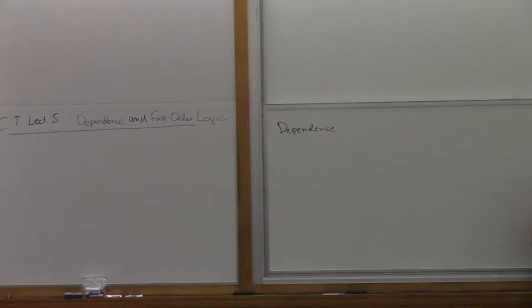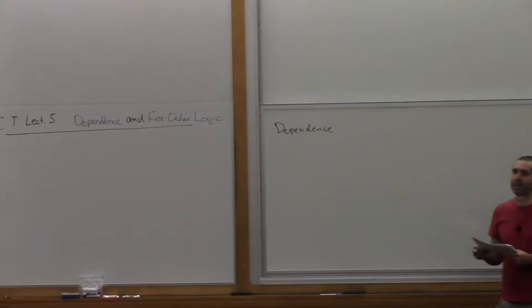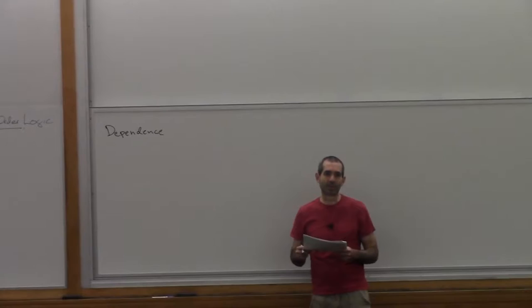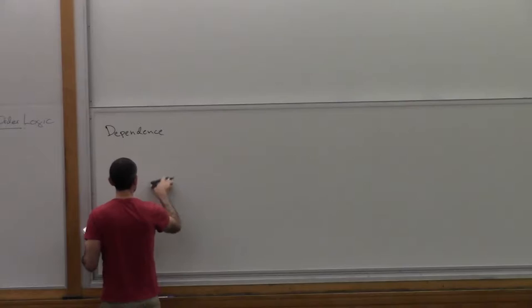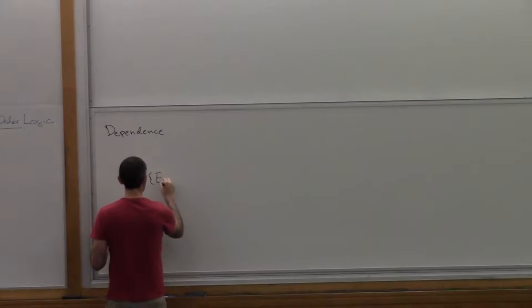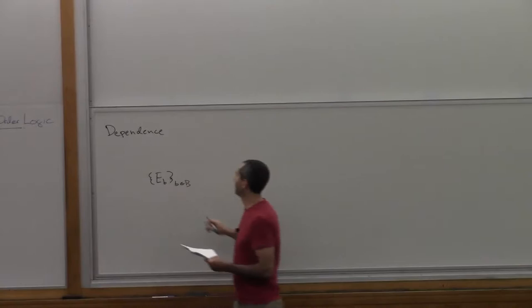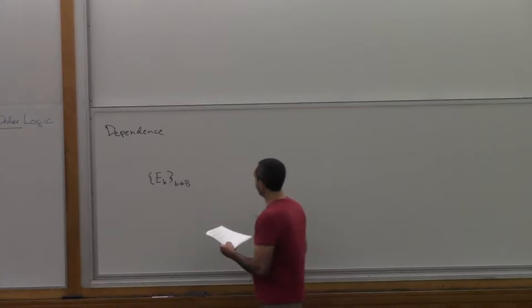A pretty fancy version of this is dependent type theory that Bob was talking about. But a very simple version of this is the indexed family of sets construction that we saw back in my second lecture when we went to the Hogwarts School of Witchcraft and Wizardry. And there we saw that we could take an indexed family of sets.